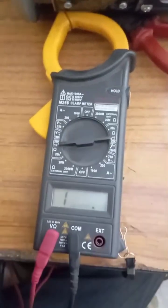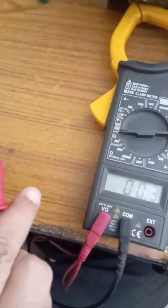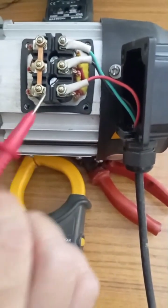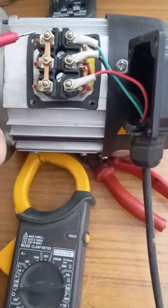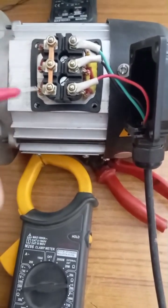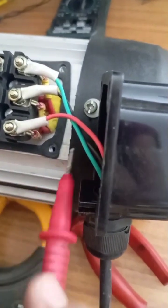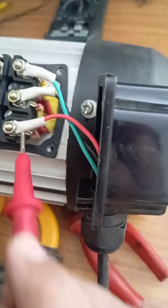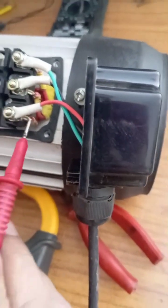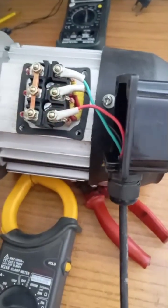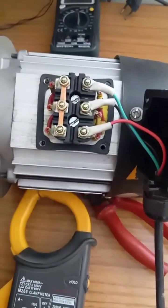Here, this motor has got 6 terminals, in which 3 terminals are shorted together to make it star connection and power supply is fed to these 3 terminals. These are U1, V1, W1 and here it is U2, V2, W2.